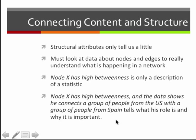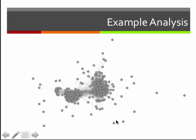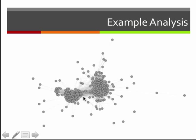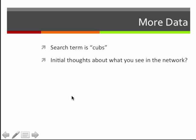Let's do another example analysis. Here there are two obvious clusters and some other nodes on the outside. This is another 1.5 egocentric network of a search term, but this time on YouTube. The nodes represent videos that have the search term either in their description or labels, and links indicate videos that share at least one other keyword in common. The search term I used is 'cubs' — I searched for that word on YouTube and it returned this graph.